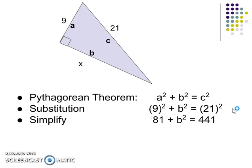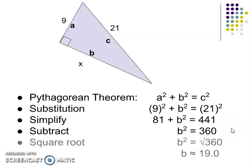Simplifying, 9 squared is 81. 21 squared is 441. I'll subtract the 81 on both sides. And 441 minus 81 is 360. Here, I'll take my square root to find out that b is approximately 19.0.